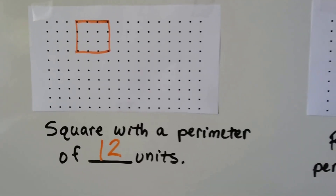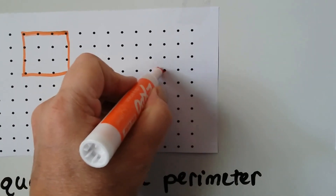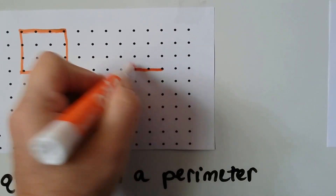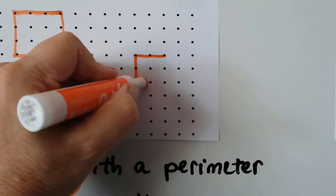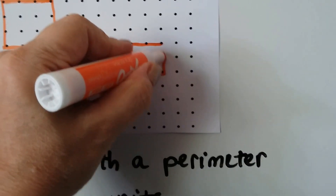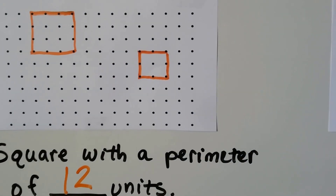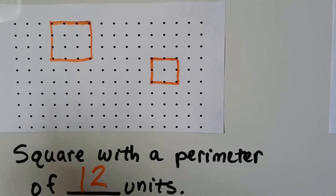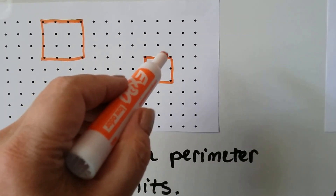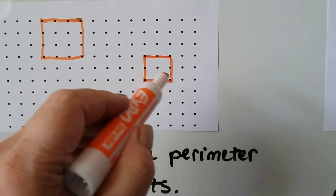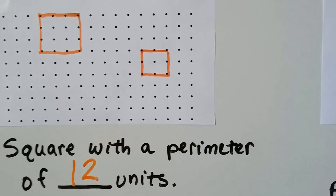We could make a square that's two units on one side — that means they all have to be two units, because that's the square: it's got all the same length sides. Now what's the perimeter? 1, 2, 3, 4, 5, 6, 7, 8.